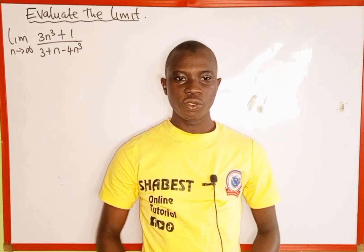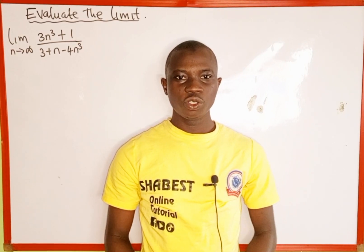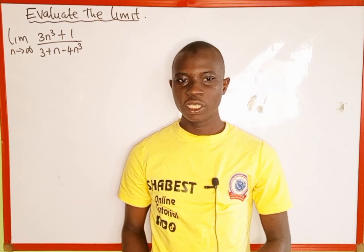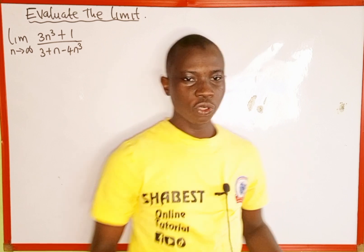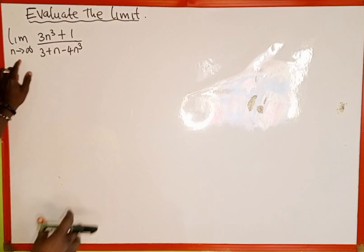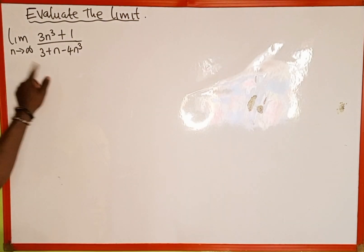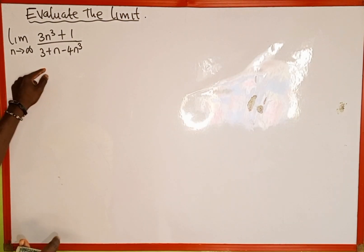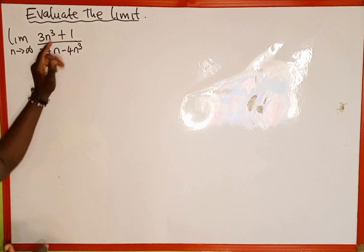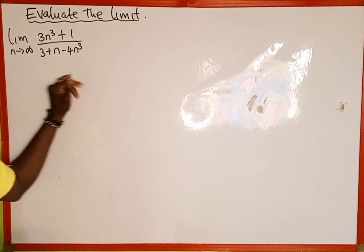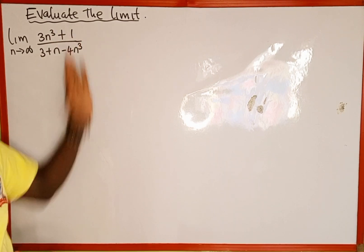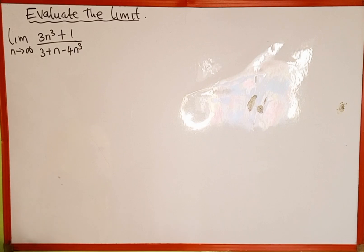Welcome back to Shabez online tutorial. In today's tutorial we're going to learn how to evaluate this limit on the board. The given limit is: limit as n approaches infinity of 3n to the power 3 plus 1, divided by 3 plus n minus 4n raised to the power of 3.